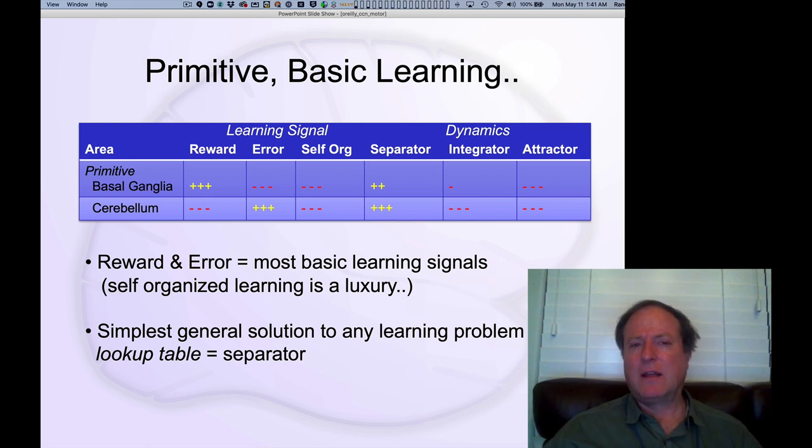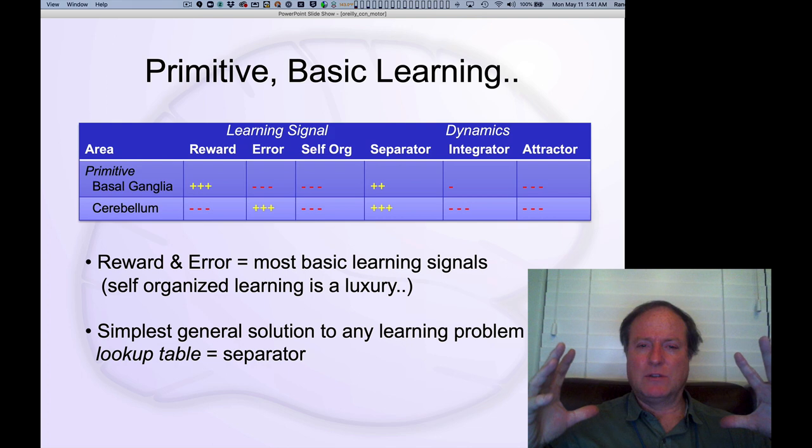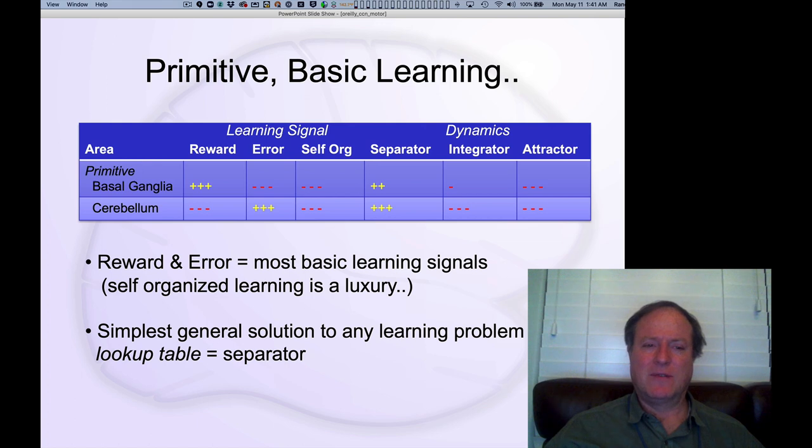So cerebellum is really this kind of core motor control system, whereas the basal ganglia is this higher-level, outer loop. What should I do? Should I go over there and forage in that bush, or should I be worried about a predator? Just these kind of very high-level issues having to deal with how are you going to get what you want, and how are you going to avoid getting eaten? So that's really these two different domains and two different timescales and two different forms of learning.